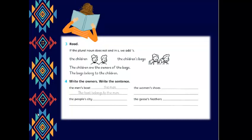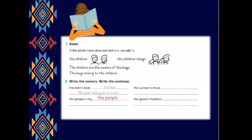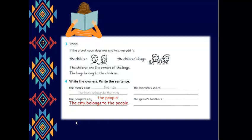Write the owners and write the sentence. The men's boat. The owner here, the men. The boat belongs to the men. Look at the second. The people's city. Who's the owner? The people and the city belongs to the people.